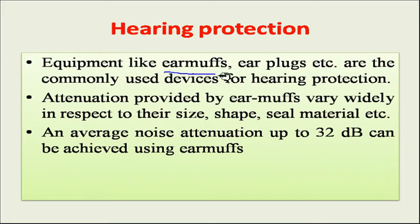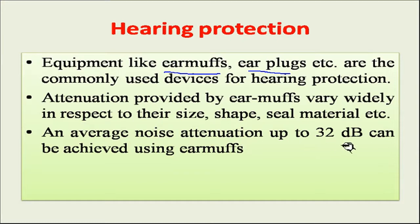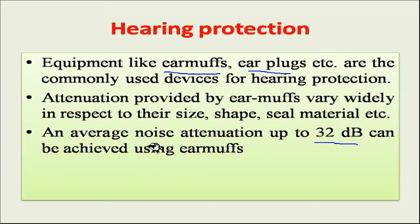Equipment such as earmuffs or earplugs are commonly used devices for hearing protection. The attenuation provided by earmuffs varies widely with respect to their size, shape, and seal material. An average noise attenuation of up to 30 decibels can be achieved using earmuffs. This is what you can do to reduce noise pollution. Thank you very much.